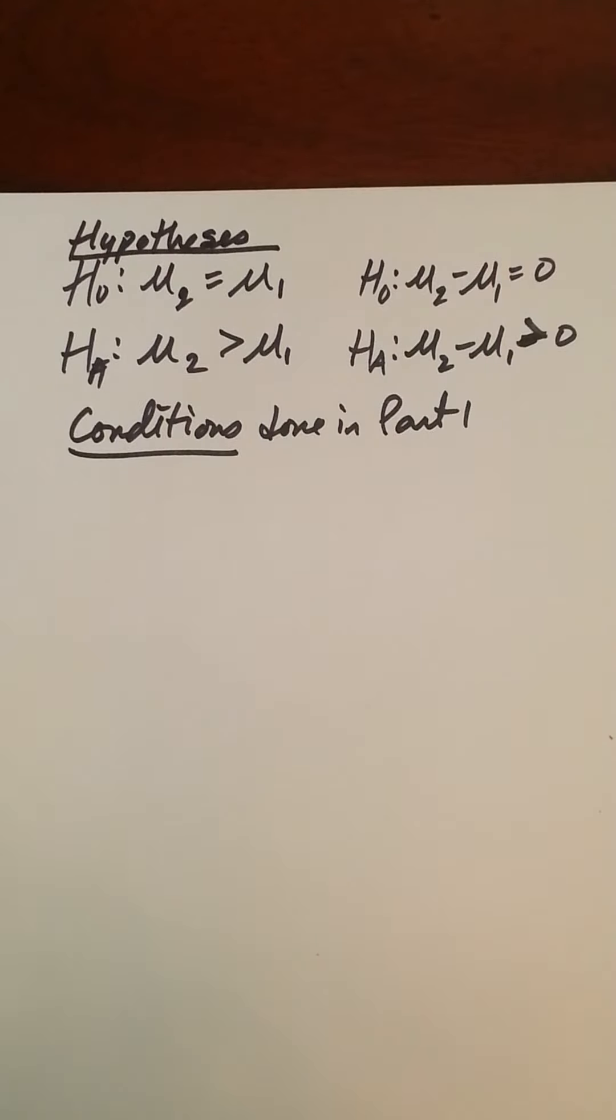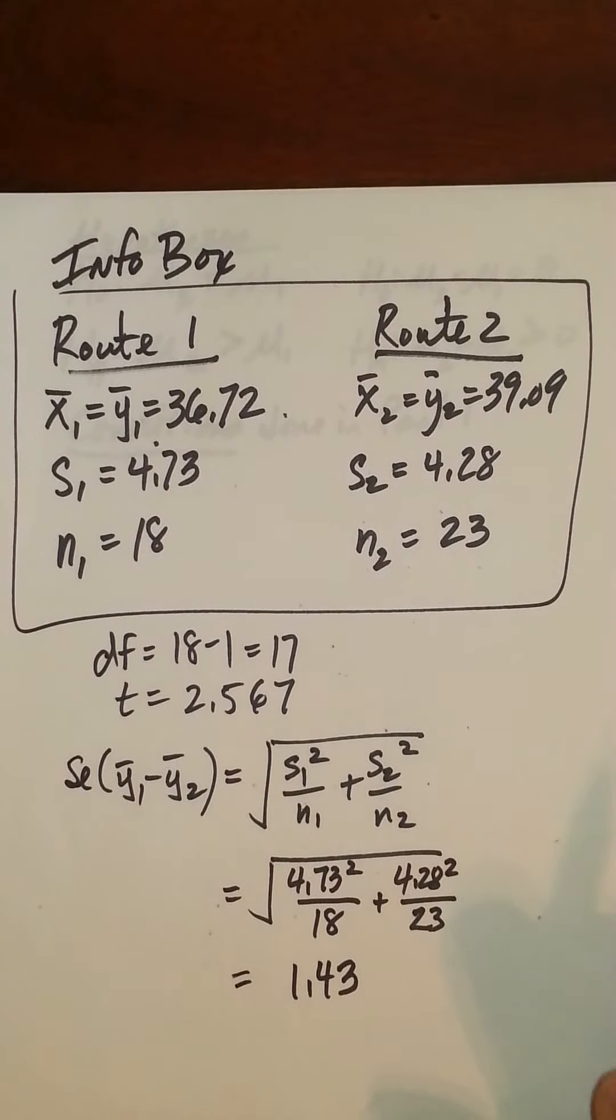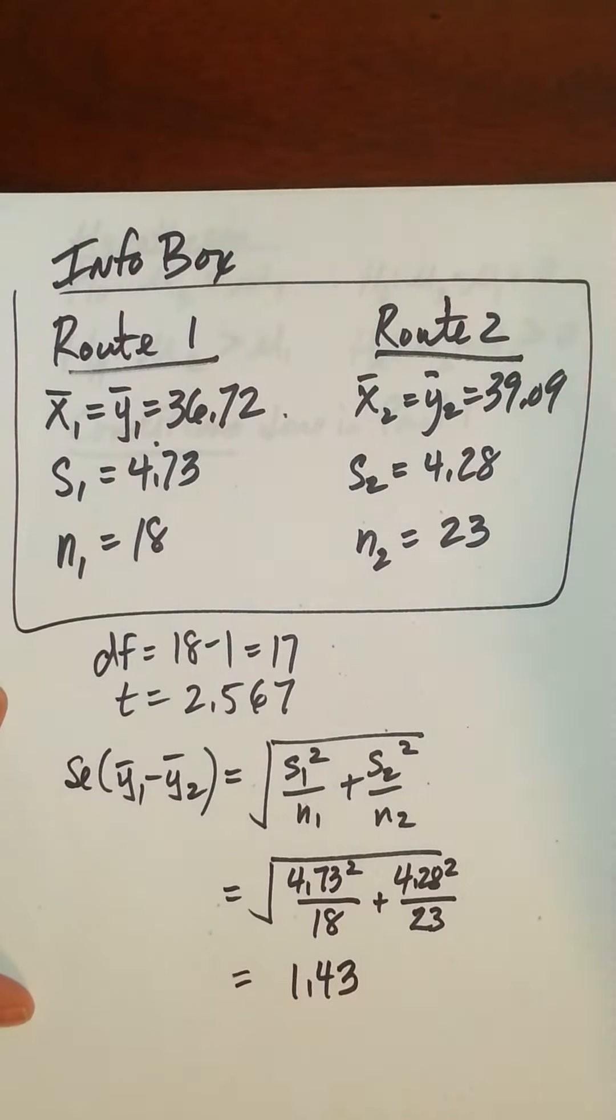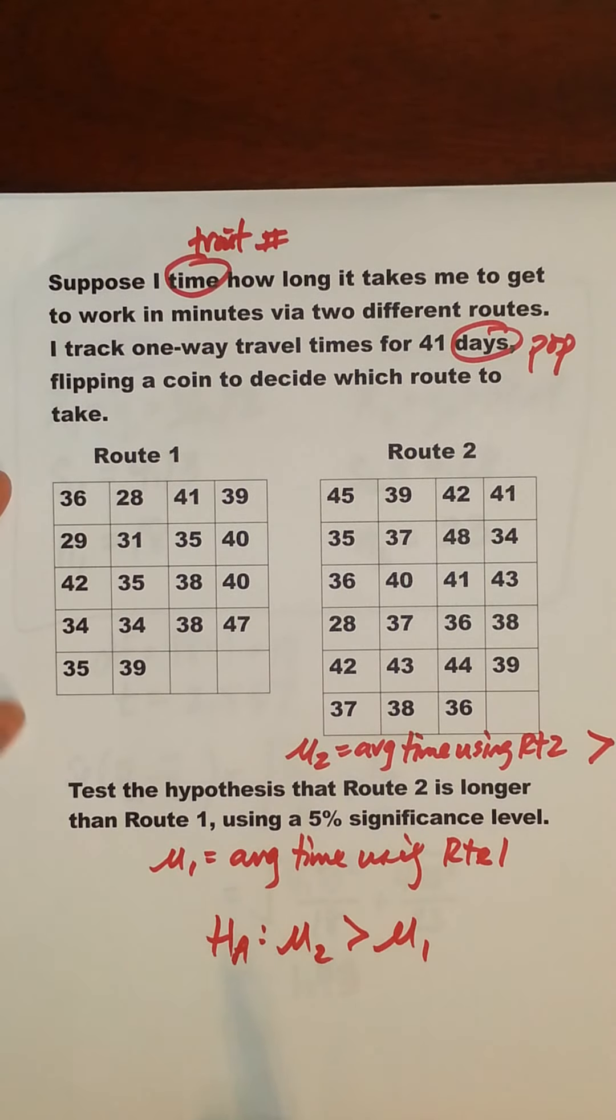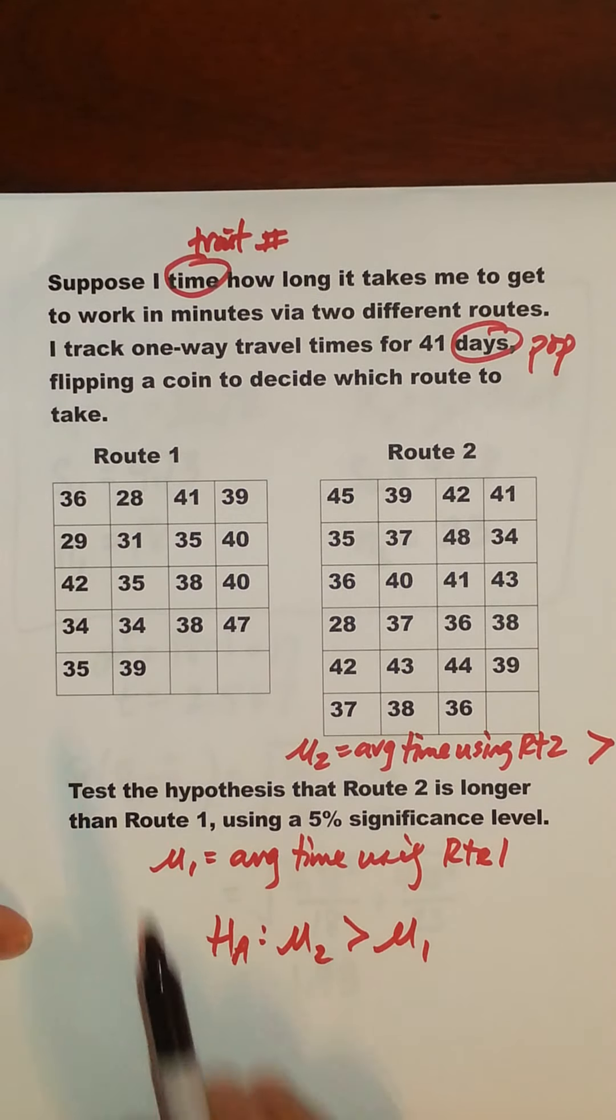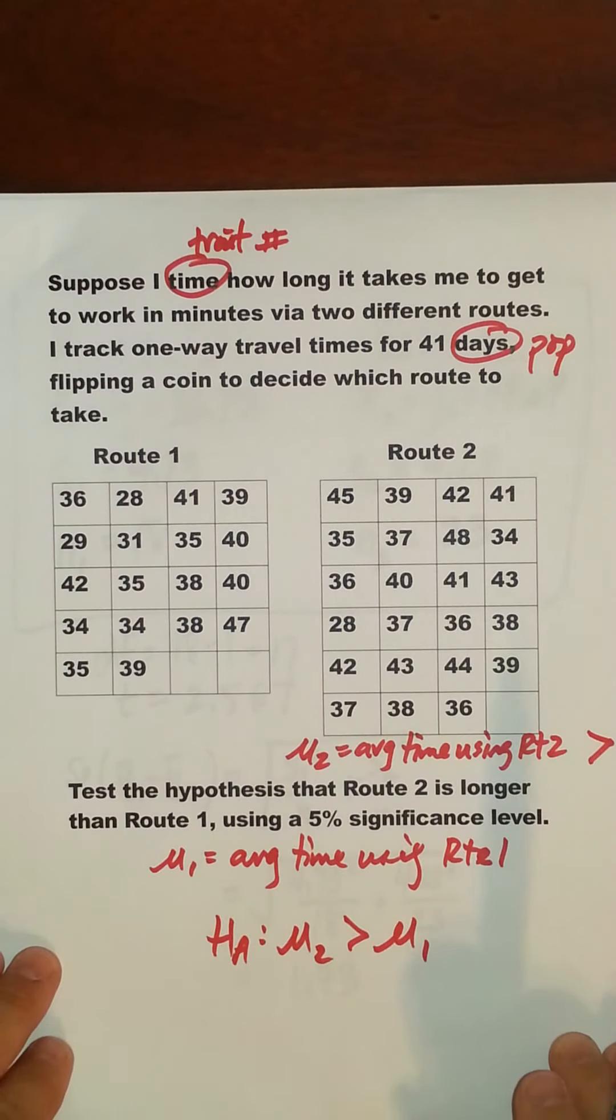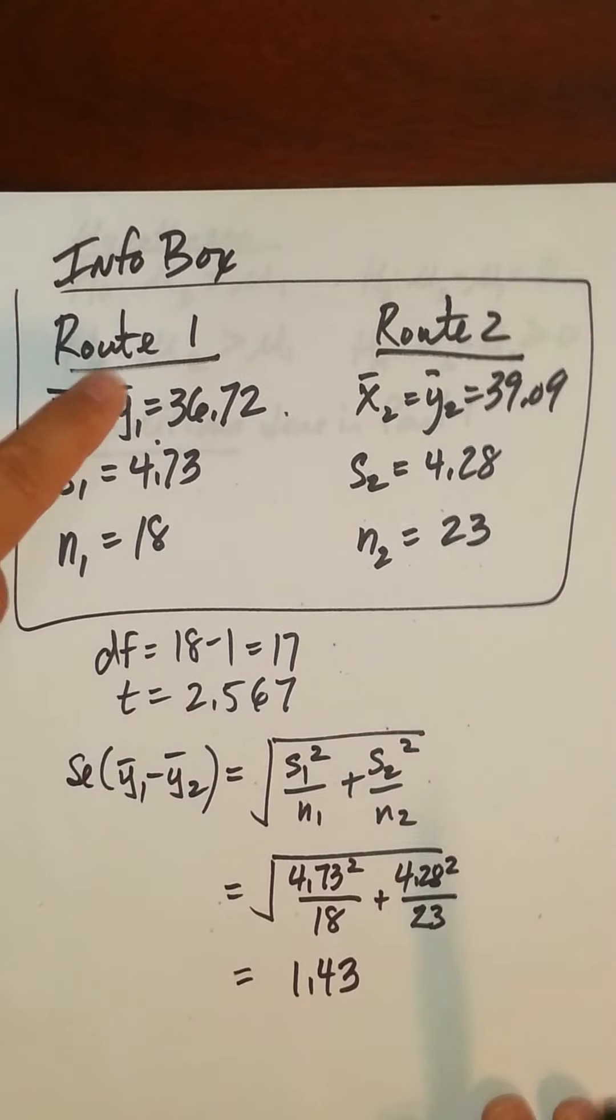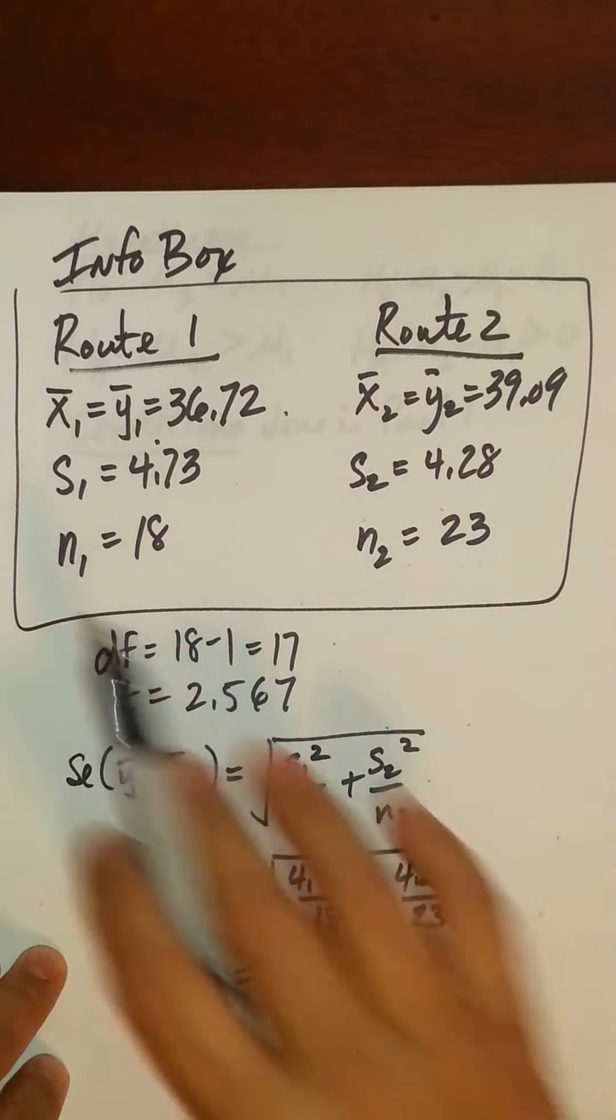And then we went ahead and did an info box, just organizing our information. This you would get from putting the values in List 1 and List 2. So let me put up these values again, so you don't have to rewind. If you haven't put those values in, I would suggest you go ahead and get your TI calculator or whatever, go ahead and put these in List 1 and these in List 2. And then just double check that indeed, you'll get sample means this way and the standard deviation of the sample and sample sizes here that are the same.